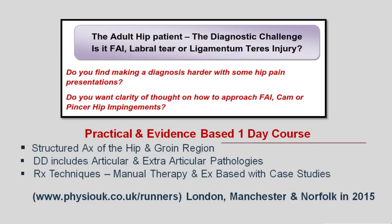Do you find making a diagnosis harder with some hip patients and want to improve your clinical reasoning on non-OA hip patients? You might be interested in a one-day adult hip patient course, which is a practical and evidence-based course looking into common pathologies both articular and non-articular. The top three reasons to attend: structured assessment of this complex region, differential diagnosis of articular and extra-articular pathologies, and a big emphasis on treatment including both manual therapy and exercise-based approaches with practical case studies. Dates are coming next year in London, Manchester, and Norfolk. For further details, please visit www.physiouk.co.uk/runners.